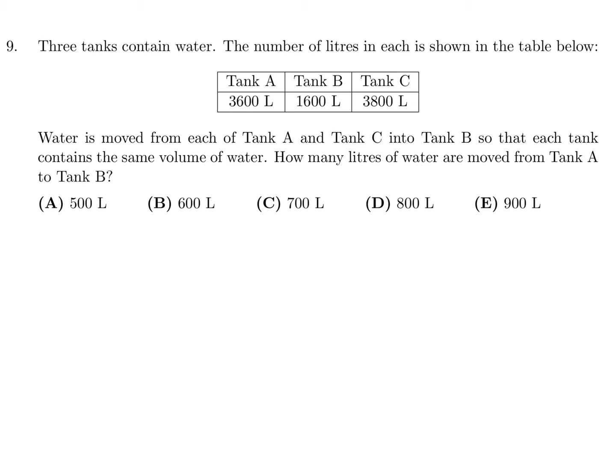Three tanks contain water. Water is moved from tank A and tank C into tank B so that each tank contains the same volume of water. How many liters are moved from tank A to tank B? If they all have to have the same volume, we need to figure out the average. Take 3600 plus 1600 plus 3800, divide by 3 - that's 9000 divided by 3, so 3000. At the end we need 3000 in each tank.